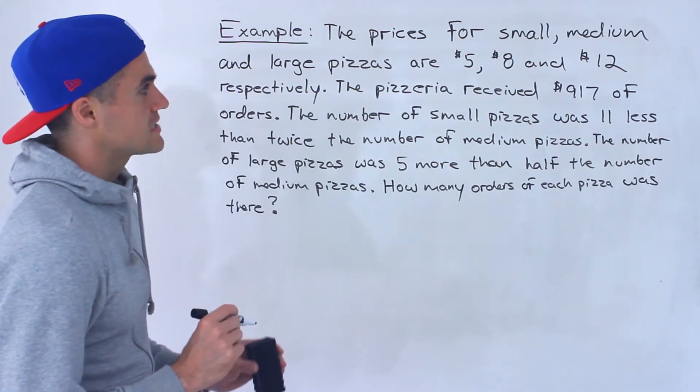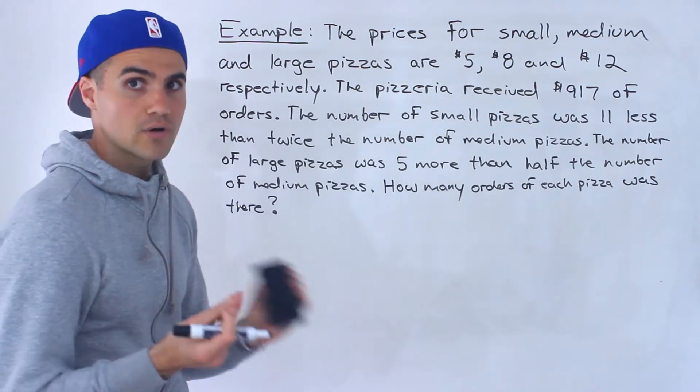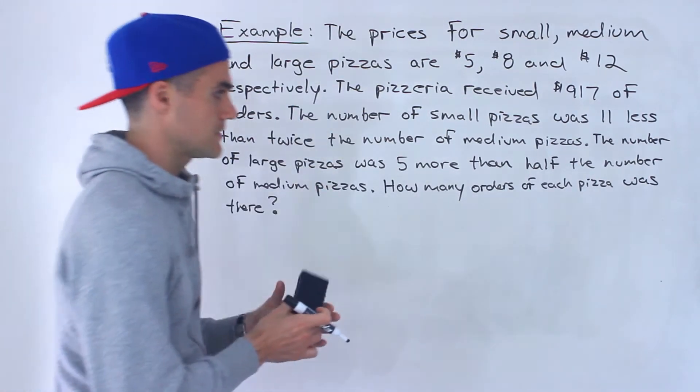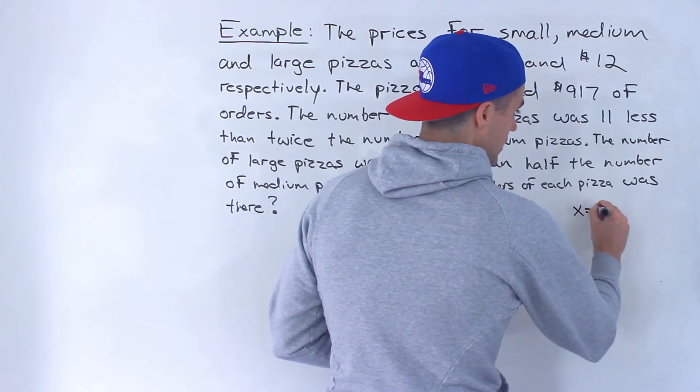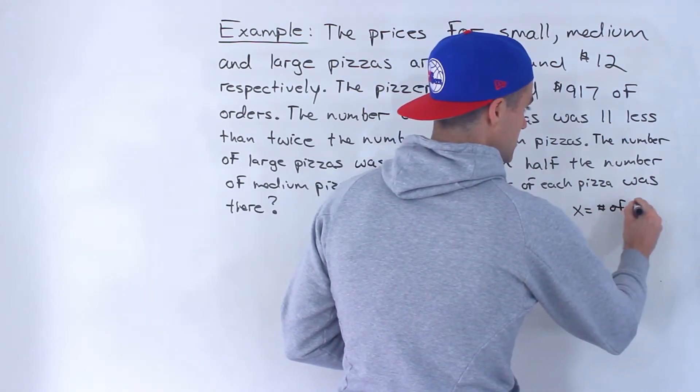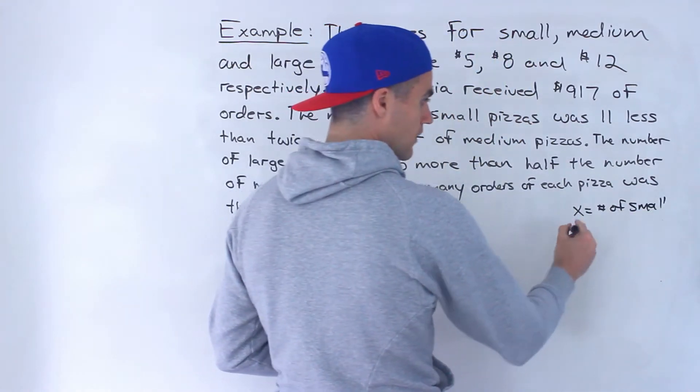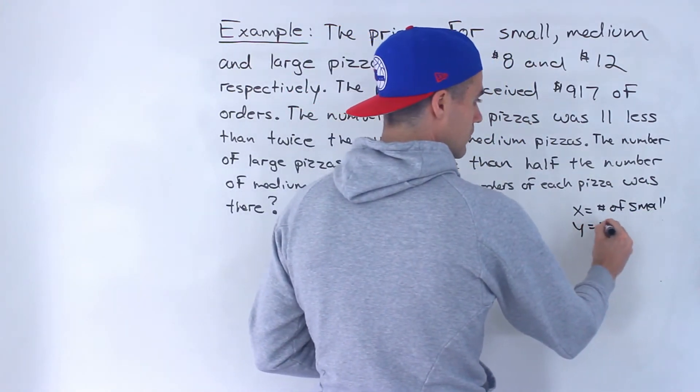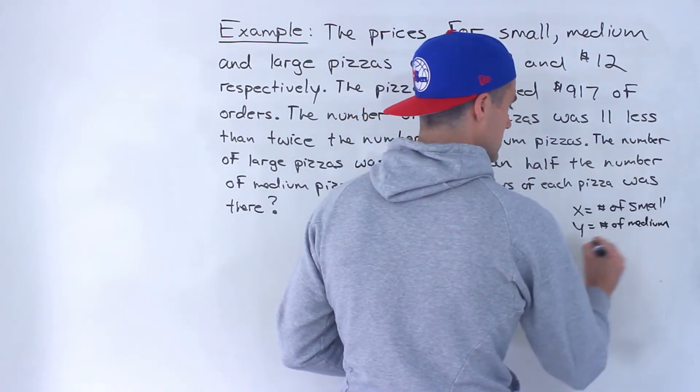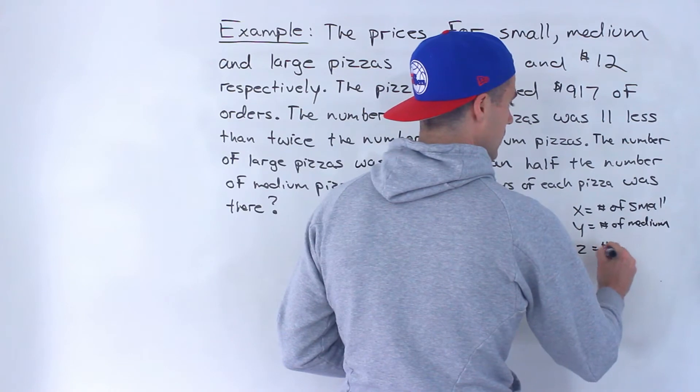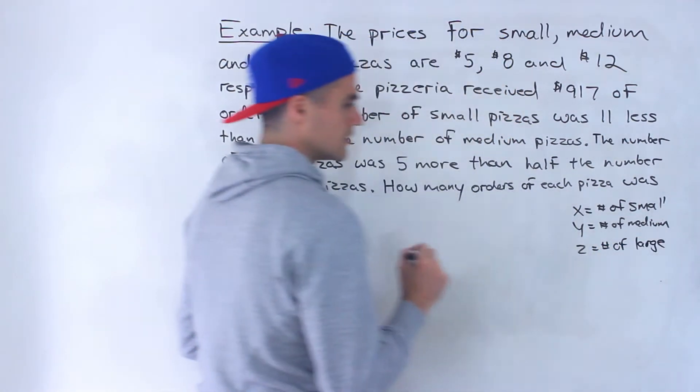So in this case notice that we're actually going to have to introduce initially three variables because there's three different kinds of pizzas. So what I'm going to do is I'm going to let x equal the number of small pizzas, y equals the number of medium pizzas, and then z would be the number of large pizzas.